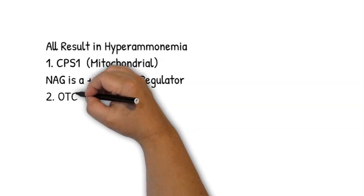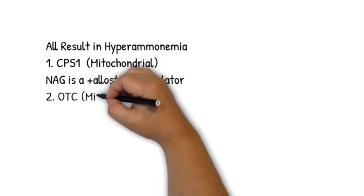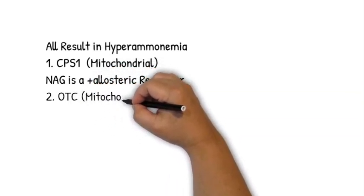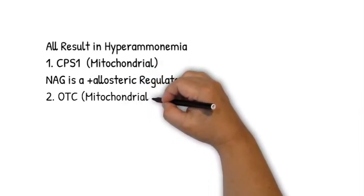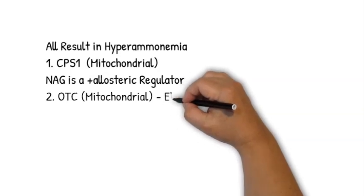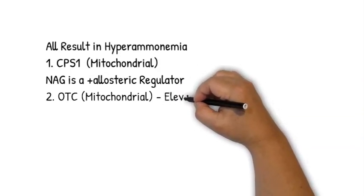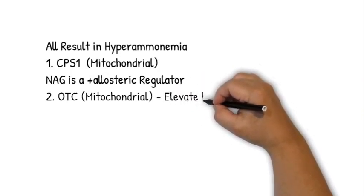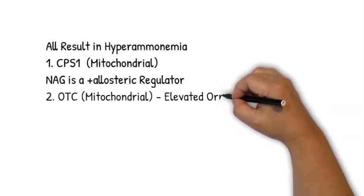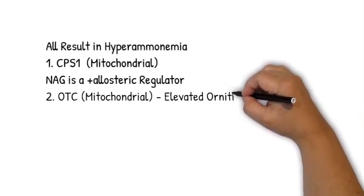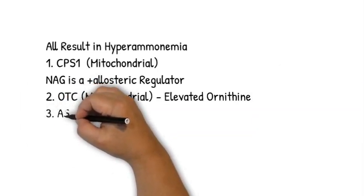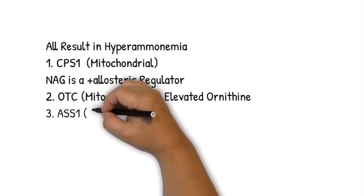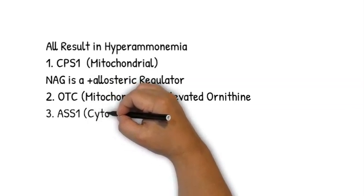Secondly, we could have a deficiency of OTC, ornithine transcarbamoylase, which is a mitochondrial enzyme. This is probably the most common urea cycle disorder that you will encounter. In this deficiency, we usually see an elevation of ornithine because that is the substrate on which this enzyme acts, and so the substrate cannot be converted.